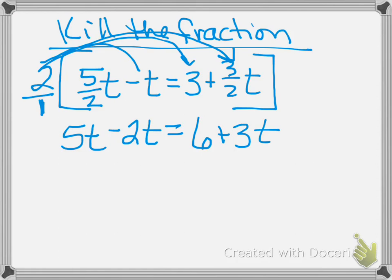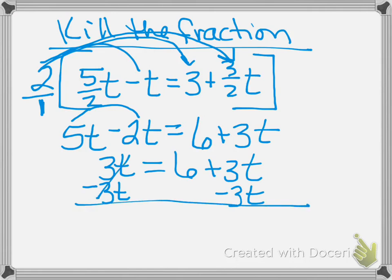Combining like terms on the left, here's a five T minus a two T. What is that? Three T. And on the right, six plus three T. Take my variables together. Subtract three T. Three T minus three T on the left is zero, and six on the right, and three T minus three T cancels. So zero equals six. What is my answer? No solution. Does not have an answer at all.